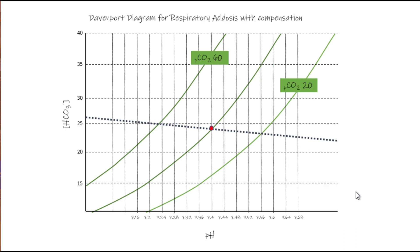Let's do a couple of examples using the Davenport diagram. Starting at our normal pH of 7.4, a respiratory acidosis would be an increase in CO2 — let's jump to a CO2 of 60. The way we compensate that is by our kidneys, and our kidneys are going to compensate by increasing our bicarbonate levels. As we increase our bicarbonate levels, notice that we're bringing our pH back into a normal range. This depicts renal compensation for a respiratory acidosis with compensation.